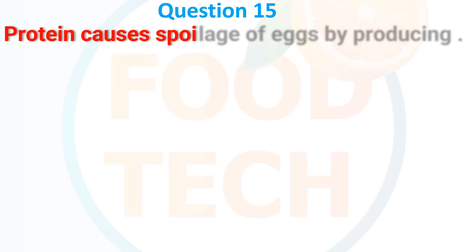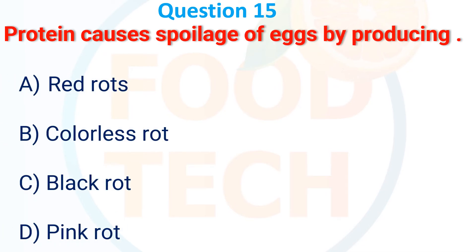Proteus causes spoilage of eggs by producing: A, red rot; B, colorless rot; C, black rot; D, pink rot. The answer is C, black rot.